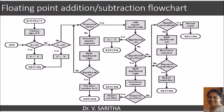For subtraction, we change the sign of y. When performing x minus y, y is initially considered positive. By changing the sign of y to negative, the operation becomes x plus (−y), meaning the ultimate operation performed is addition. So subtraction is converted into addition, and the same flowchart is used for both addition and subtraction.